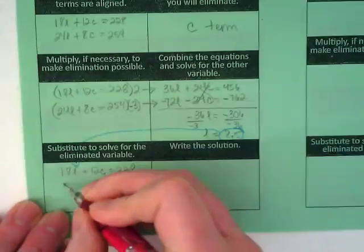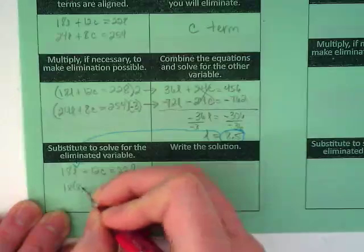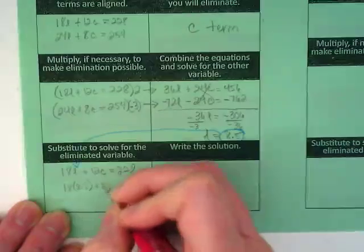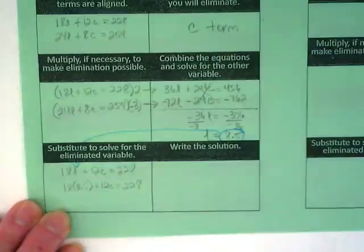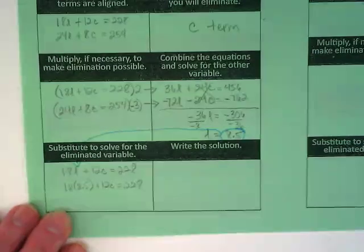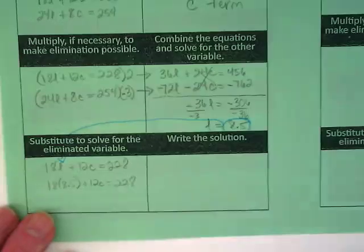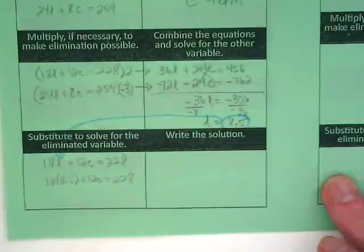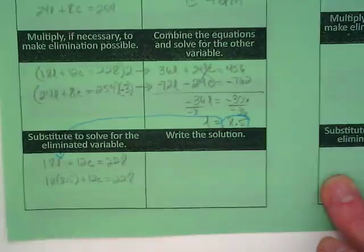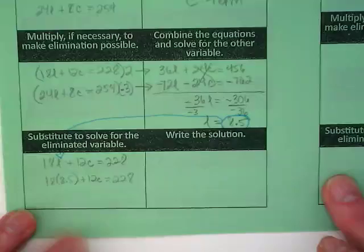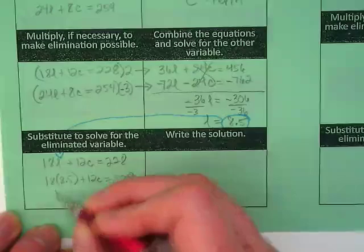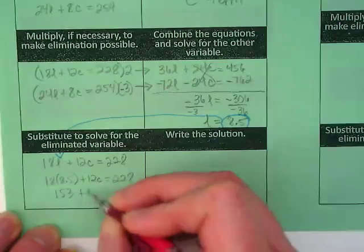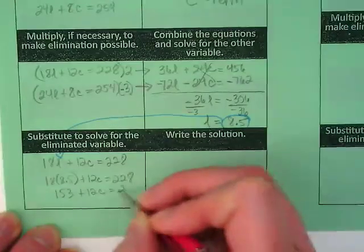So this gets rewritten as 18 times 8.5 plus 12C equals 228. 18 times 8.5 is 153 plus 12C equals 228.